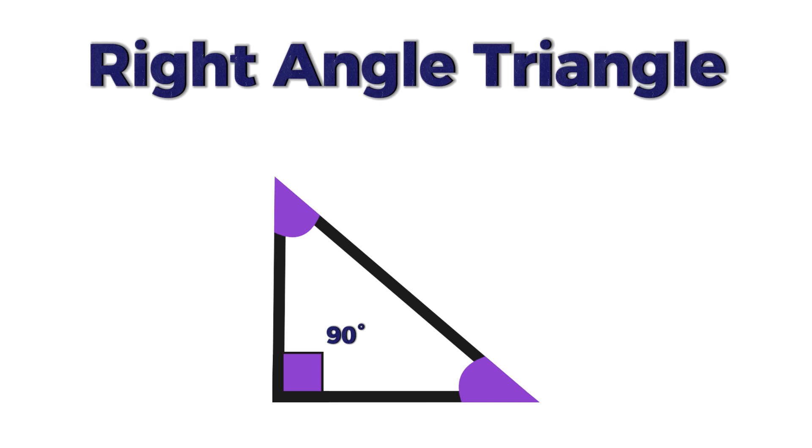Next, the right angle triangle. In a right angle triangle, one angle is exactly 90 degrees, forming a right angle.